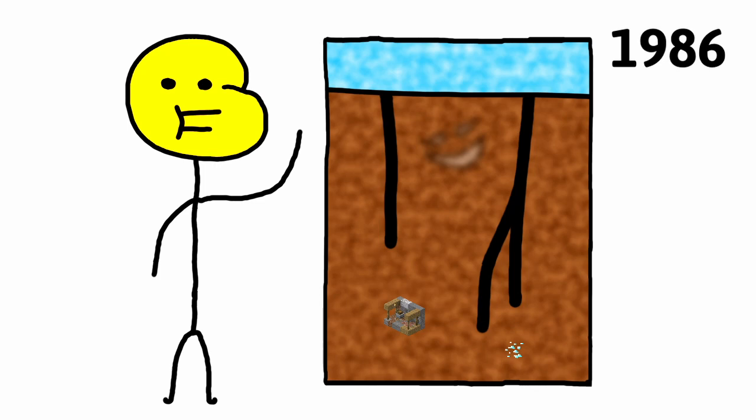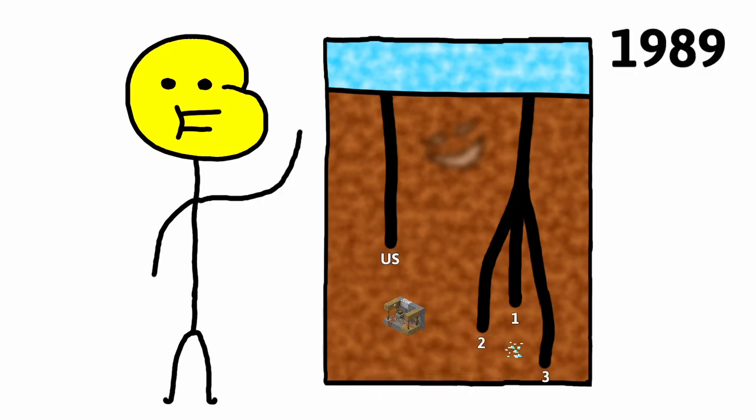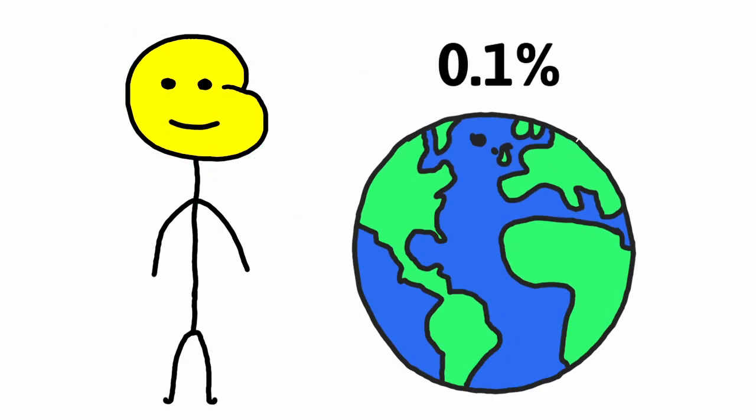The third hole was started in 1986 at 7,000 meters in the first hole. The third hole reached 12,262 meters in 1989. There would later be a breakdown of some kind in June 1990, so it was also abandoned. Spoiler alert: this would be the deepest hole, and it's not even 0.1% of the Earth's diameter.